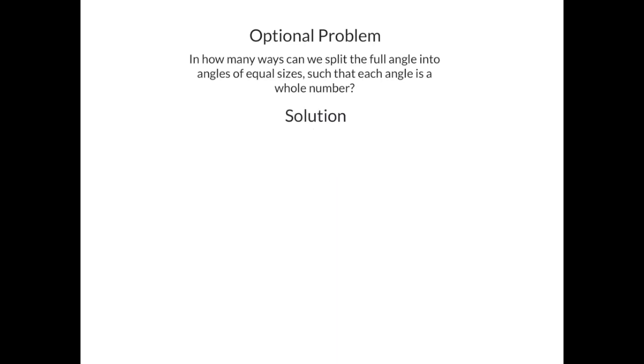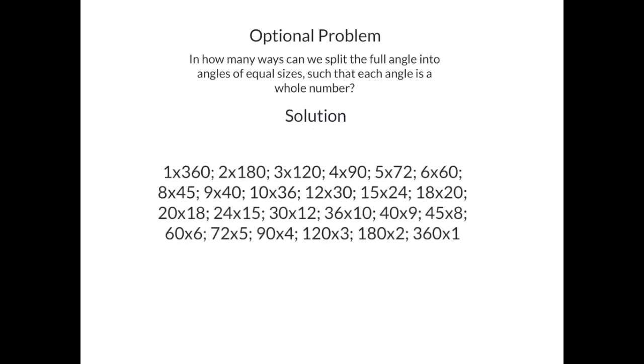And here is the solution. It turns out, there are 24 ways in which you can split the 360 degrees into angles of whole number sizes. Here you can see a list of all the possible ways. So this means that we split it into one part of 360 degrees, this means that we split it into two parts of 180 degrees each, this means we split it into three parts of 120 degrees each, and so on and so on.